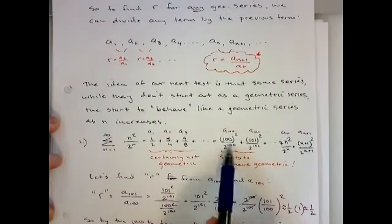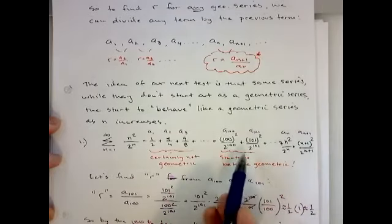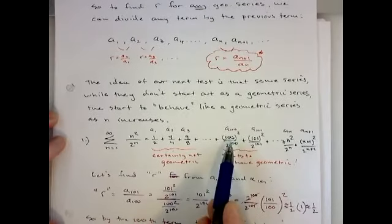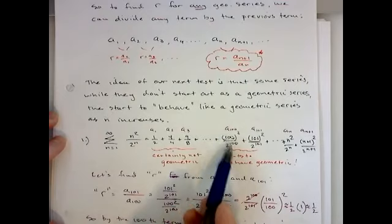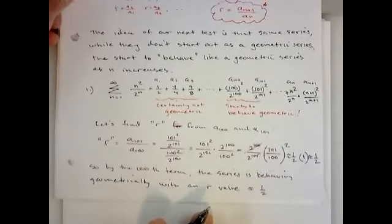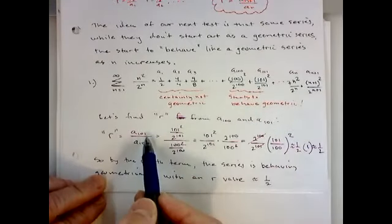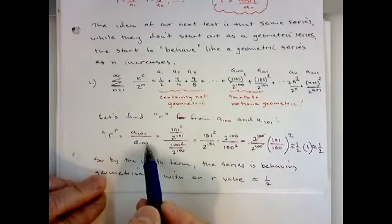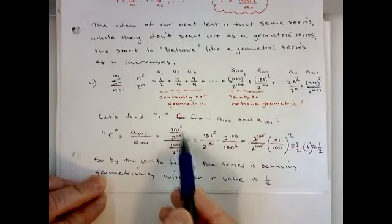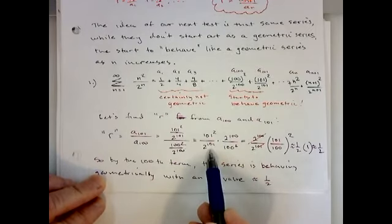Eventually, from one term to the next, it is starting to look like a geometric series where you're multiplying by a constant term. To show this, let's take our hundredth and our hundred-and-first terms: 100 squared over 2 to the 100, and then 101 squared over 2 to the 101. If I compute the R value between these two terms, I take a_101 divided by a_100 — that term divided by the previous term. Those are big numbers, but if you flip the bottom there's a nice way to simplify.